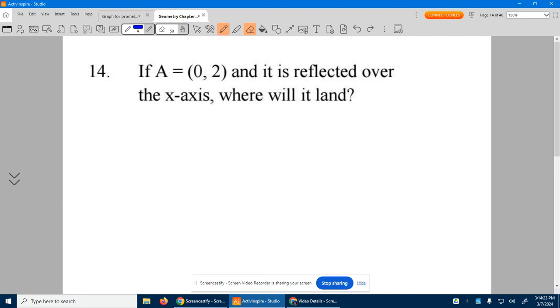If A is located at the point (0, 2) and it's reflected over the x-axis, where will it land? Well, A is at (0, 2). So you've moved over none, up 2. So there we are here at a height of 2. A is at (0, 2)—over 0, up 2. That's right there.